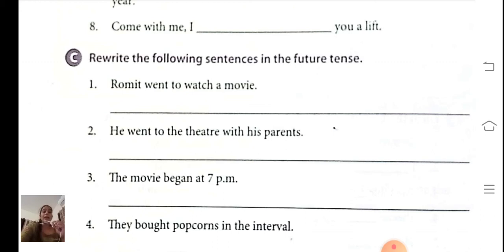He went to the theater with his parents. So he will... Root form of went is go. He will go. He will go to the theater with his parents.